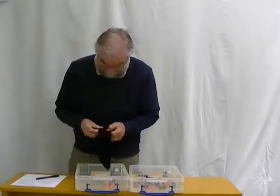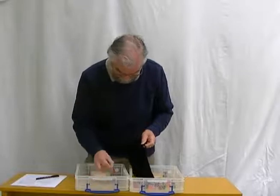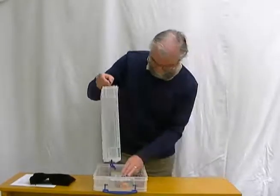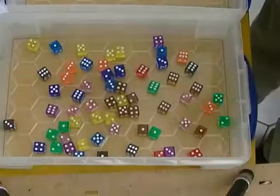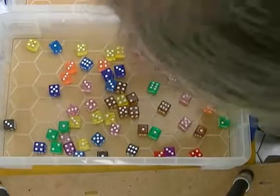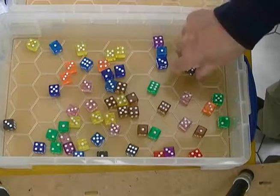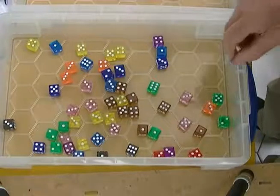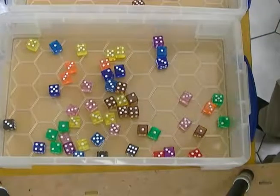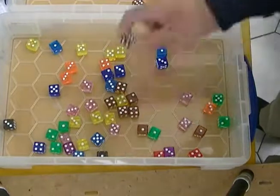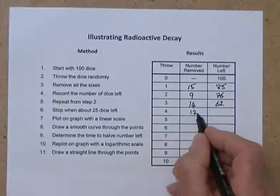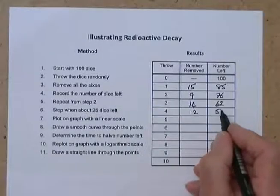We'll take these fourteen out of circulation and throw again. And how many sixes are there? One, two, three, four, five, six, seven, eight, nine, ten, eleven, twelve — and I think that's it, twelve. So that takes us down to fifty dice, just half of them remaining after four throws.